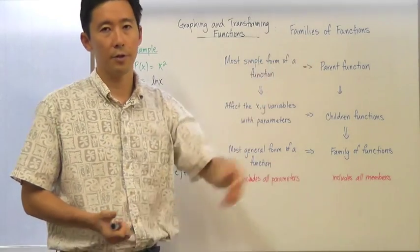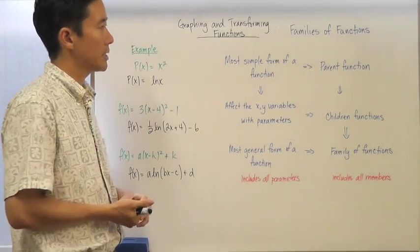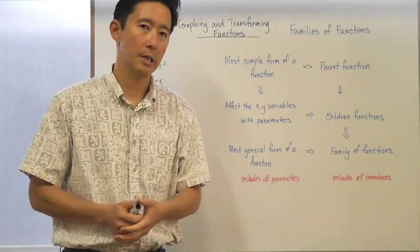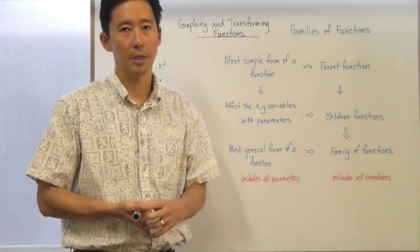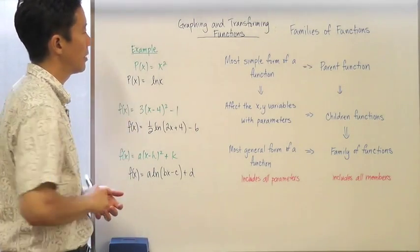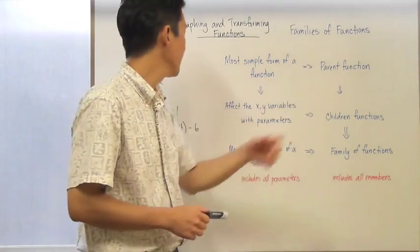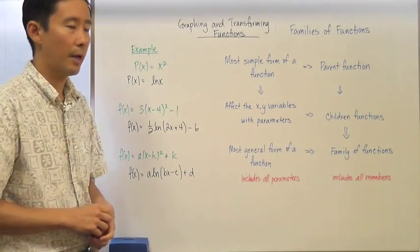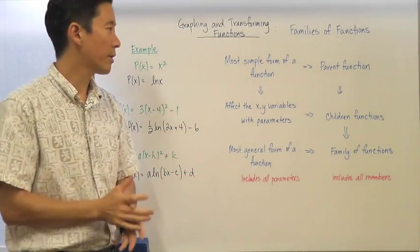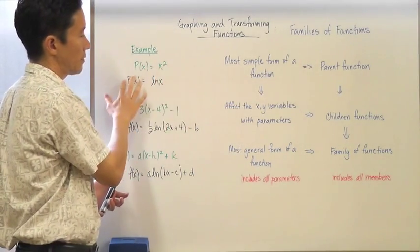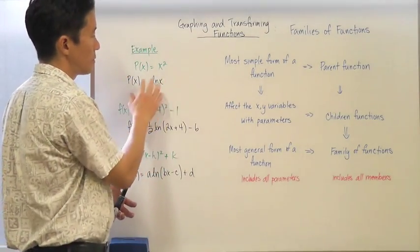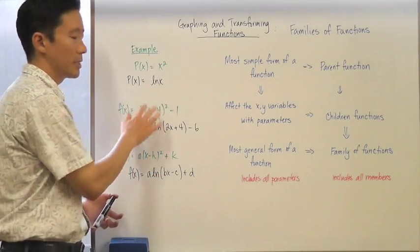Let's take a look at the most simple form of a function — what I'm going to call the parent function. It is the most simple form of a function. For example, p(x) = x² is one parent function, and p(x) = ln(x) is another. These are very simple functions and notice they are completely different — one is a quadratic function and the other is a logarithmic function.